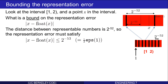In general, the 2 to the negative 53 is really just one half of eps(1), because 2 to the negative 52 for doubles is precisely eps(1). It's the separation in this 1 to 2 interval, and we've just argued that the error must be less than or equal to half that separation. That's a bound on the absolute difference.